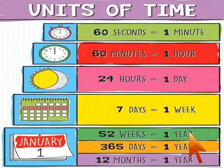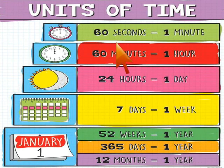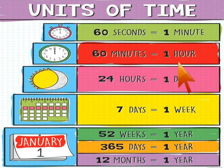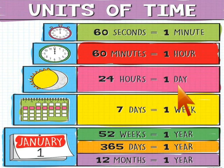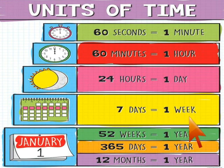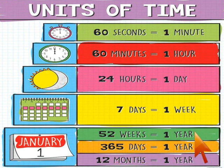Now let's look at units of time. If you're measuring time, you might hear words like seconds — there are 60 seconds in one minute. Minutes — there are 60 minutes in one hour. Hours — there are 24 hours in one day. Once seven days have passed, that equals one week. Once 52 weeks have passed, that equals one year. There are also 365 days in one year, or 12 months in one year.